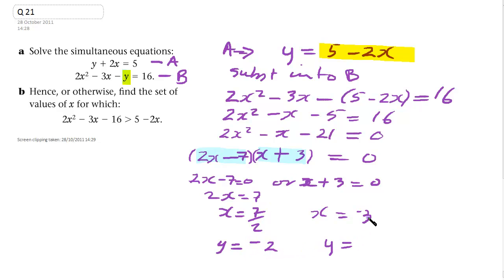And when x is minus 3, put minus 3 into here. Minus 2 times minus 3 is 6. 6 added on to 5 gives us 11 for our y value. And that's our answer to part A.